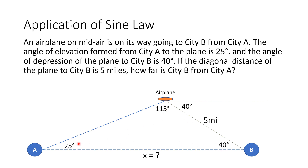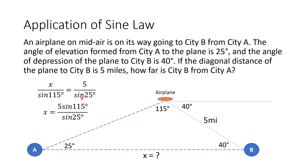Now we use sine law to solve for the distance between city A and city B. So x over sine 115 degrees equals 5 miles over sine 25 degrees. Simplifying for x: 5 times sine 115 degrees over sine 25 degrees, which gives us the distance between the two cities equal to 10.72 miles. This is one way we can apply sine law in a real-life word problem.